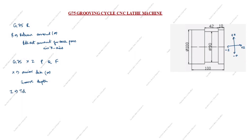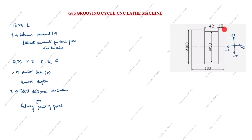You can see the ending point of the groove — this is the groove distance. The starting point is here and the ending point is here. So 42 plus 80 gives the Z distance. The total distance in the Z axis is from starting point to ending point.